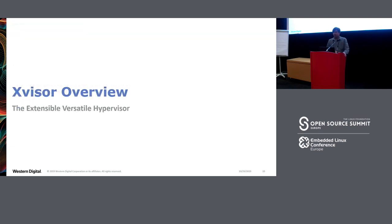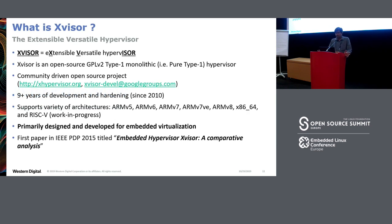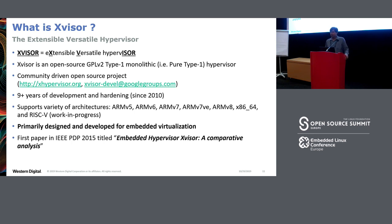Moving on to X-Visor in general: X-Visor stands for Extensible Versatile Hypervisor. It's an open-source GPLv2 type 1 monolithic hypervisor — monolithic is the key word that differentiates it from other open-source hypervisors like Xen. It's a community-driven project, not driven by any organization, in development for more than nine years. It supports a variety of widely-used architectures: ARM v5, v6, v7, v8, x86 64-bit, and RISC-V is a work in progress.